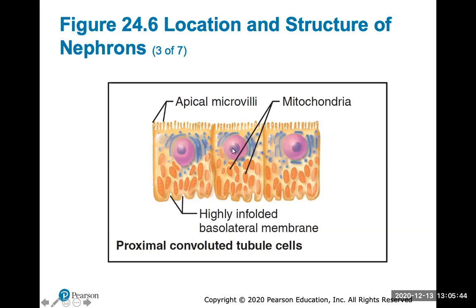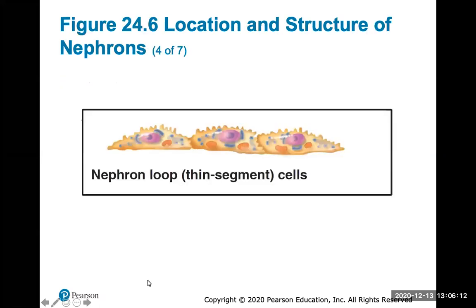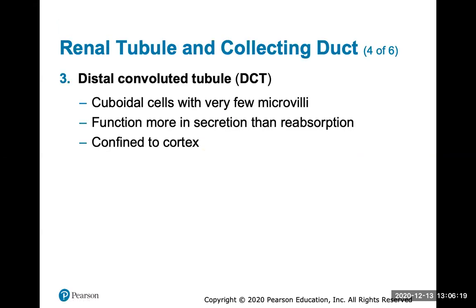The nephron loop (loop of Henle) has a descending and ascending limb. The descending limb is continuous with the proximal convoluted tubule, and the distal portion — the descending thin limb — is made of simple squamous epithelium. The ascending limb has thick and thin portions made of cuboidal or columnar cells. The distal convoluted tubule contains cuboidal cells with very few microvilli and functions more in secretion of electrolytes and ions back into the filtrate. It is confined to the cortex.